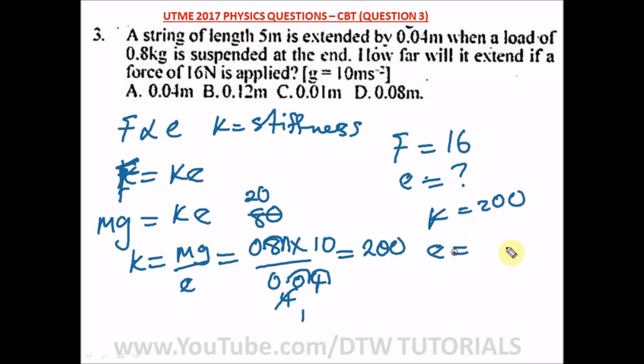So our E will be equal to F over K. And what is F? That is 16 over 200. So let's cancel out. What are we going to get? We're going to get here 4 here, 4. And 4 in 20 will give us 5, 2 here.